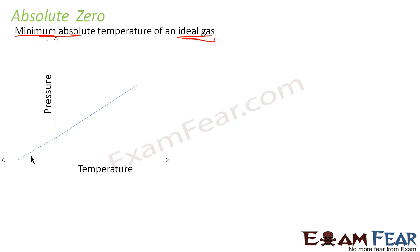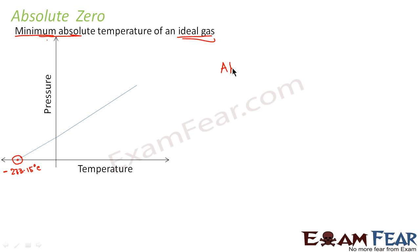If you extrapolate the graph backward, you find that the minimum temperature this graph shows corresponds to zero pressure. This minimum temperature — the minimum temperature an ideal gas can have — is known as absolute zero. Experimentally, it is found that at this point the value of temperature is −273.15 degrees Celsius. This is also known as the zero point.